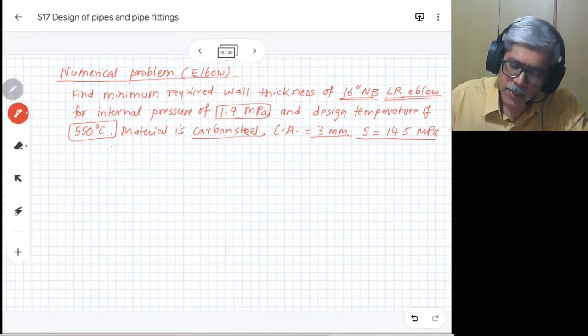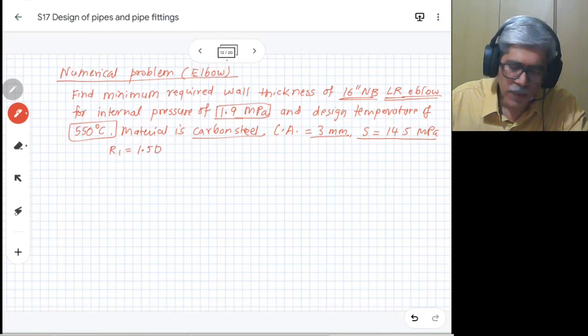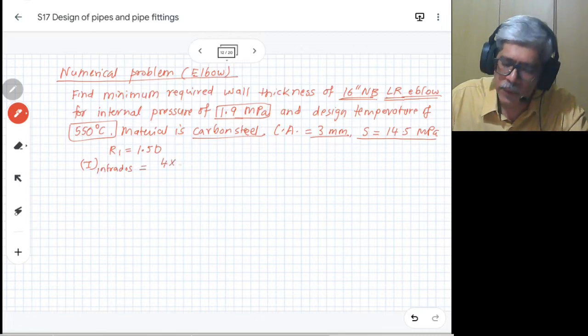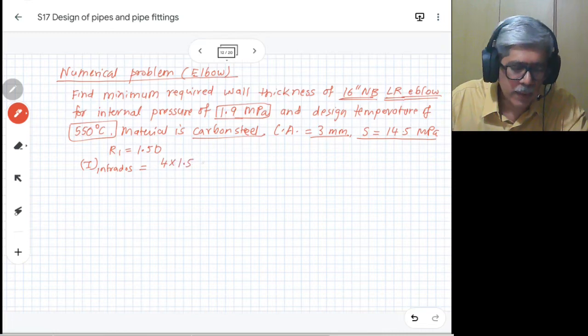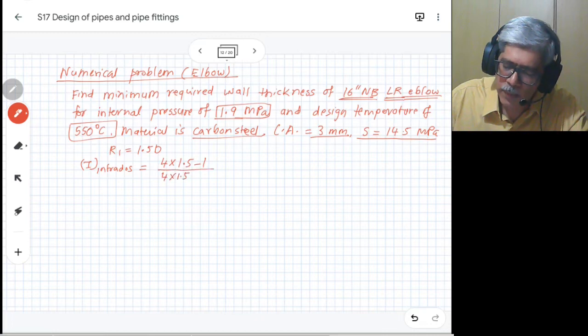Since it is a long radius elbow, we have the radius of bend equal to 1.5 times D. So the I at intrados is given as: